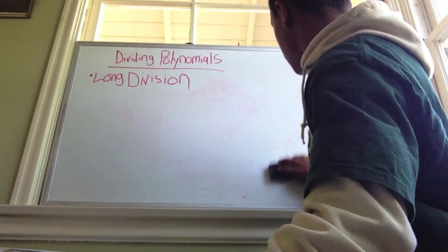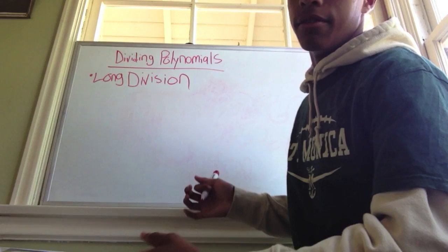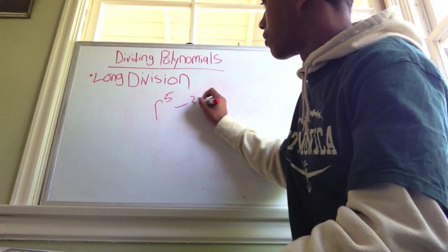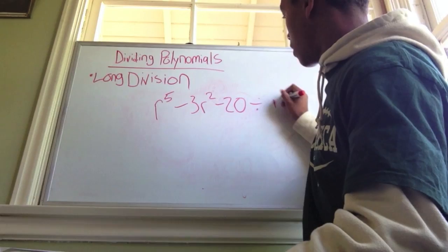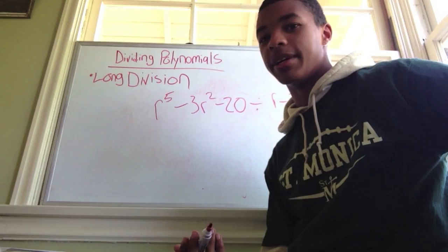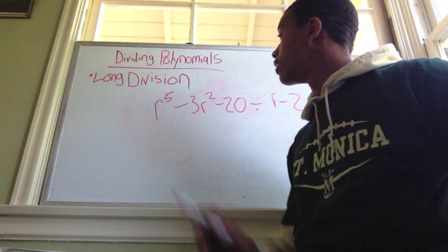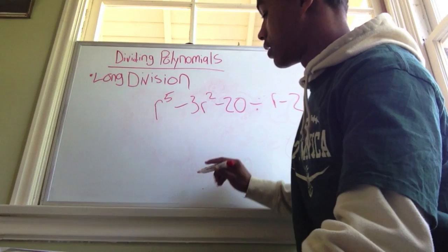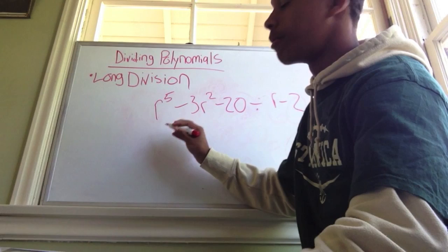On to more complicated long division. What happens when you have an equation like r⁵ minus 3r squared minus 20 divided by r minus 2? Well, you can't just divide this because the answer won't make sense — you're missing an r⁴ and r³ term. You're missing both.